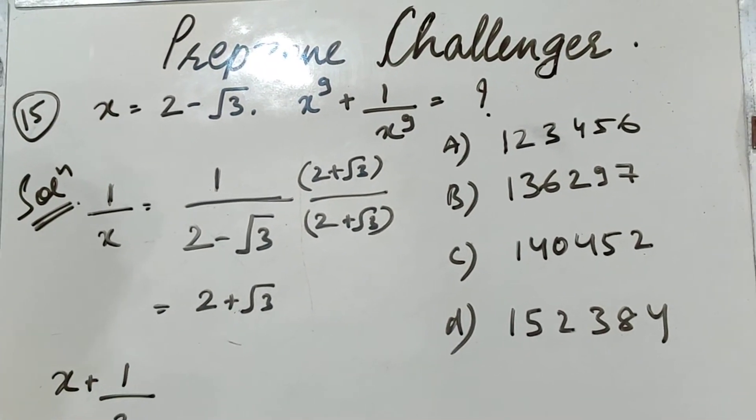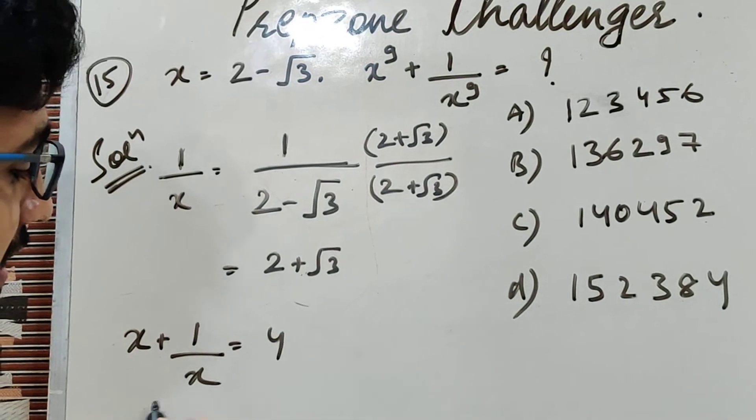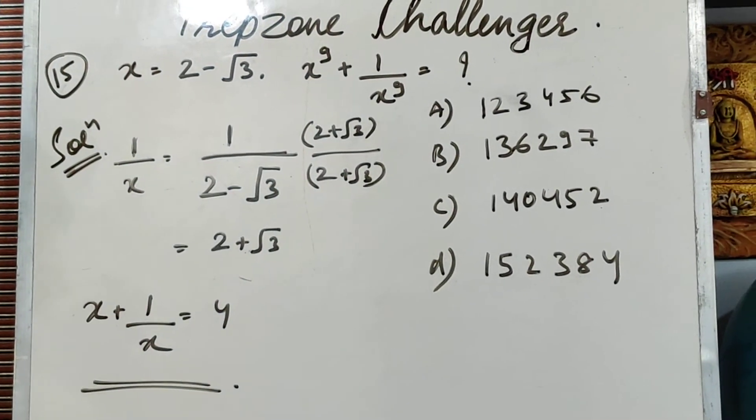So next step should be x plus 1 by x. Root 3 and root 3 cancel, 2 plus 2 is 4. So x plus 1 by x equals 4.